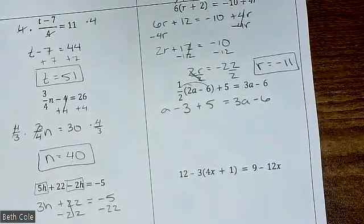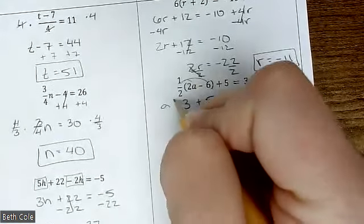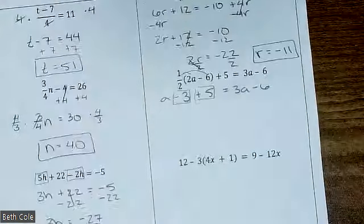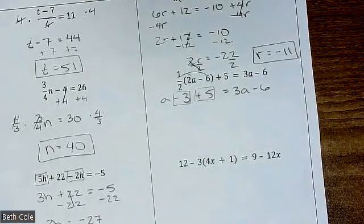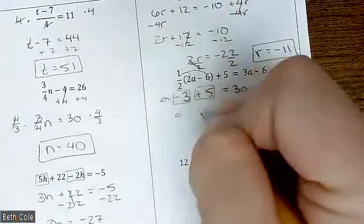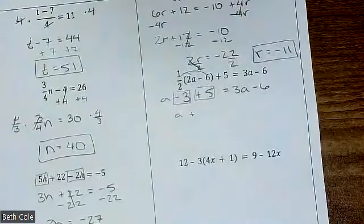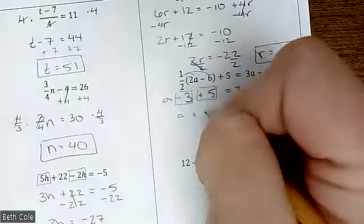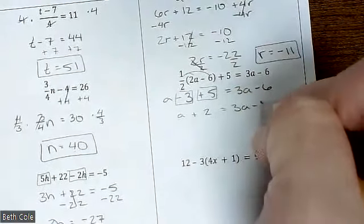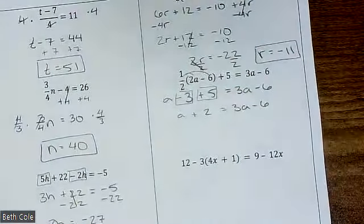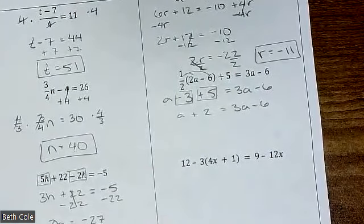If it looks really, really long, you have to do like terms. That would be your negative 3 and your plus 5 — those are going to go together. So it would be a plus — what are we going to get? 2. Equals the rest of it. Sometimes you just have to recopy things — you can do it, I believe in you. All right, then what?